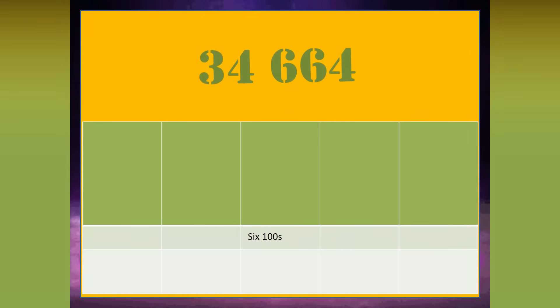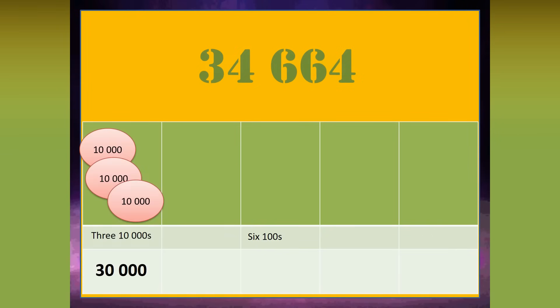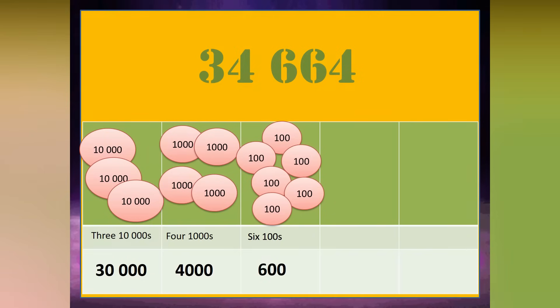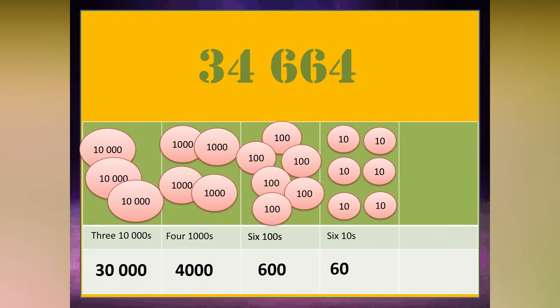To visualize 34,664, there are 3 ten-thousands, 4 thousands, 6 hundreds, 6 tens, and 4 ones.